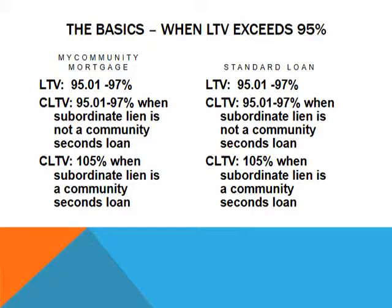The interesting thing about the standard loan is that it provides an opportunity when you don't meet the income limitation requirements that the My Community Mortgage imposes. That's why Fannie Mae decided to offer both options above 95%. The My Community is for borrowers with low and moderate income, and the standard loan is for people with any size of income.